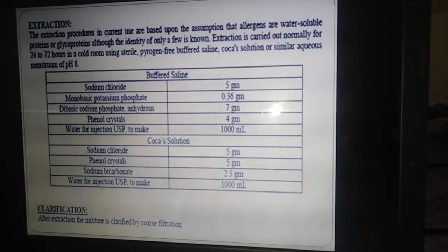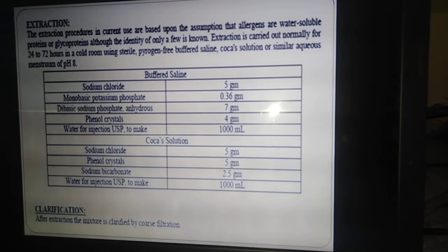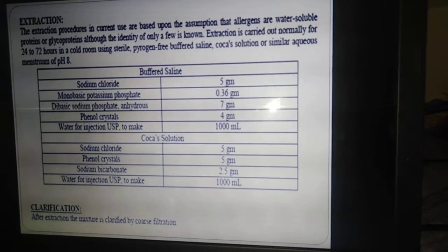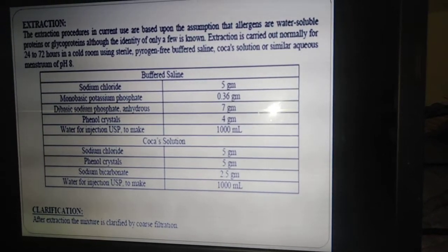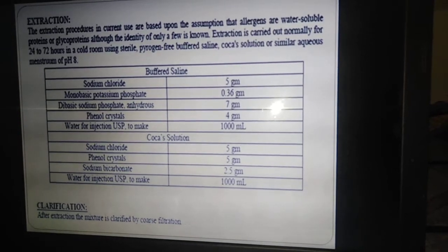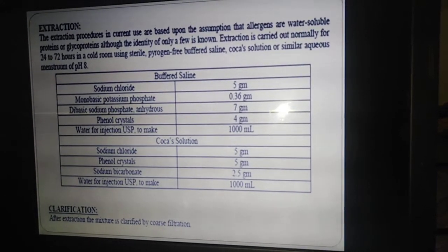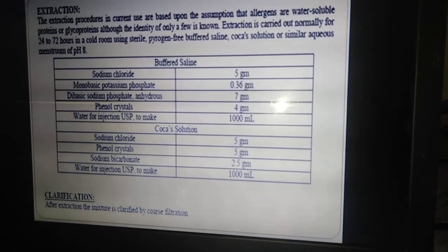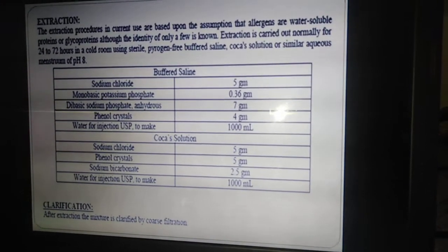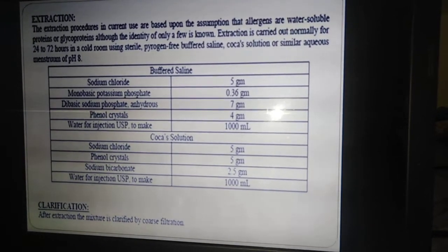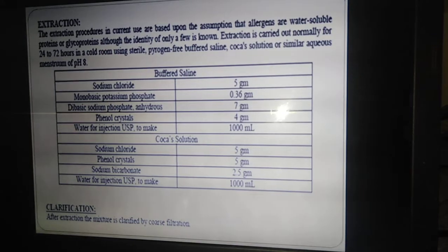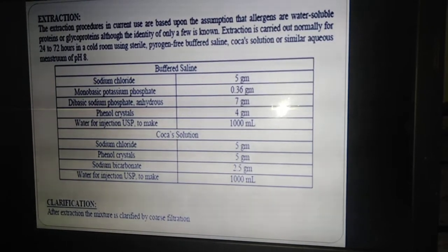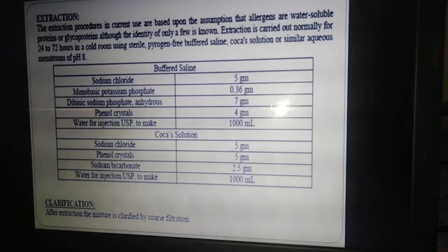Mostly either buffered saline or Coca's solution is used. The extraction duration is 24 to 72 hours in a cold room condition with sterile pyrogen-free buffered saline. The pH of the mixture is maintained at 8. This facilitates the complete extraction of allergenic extracts.